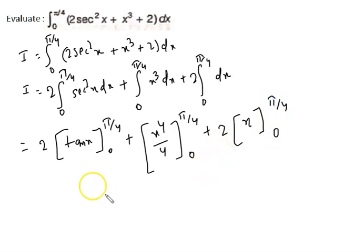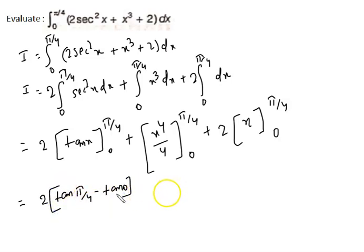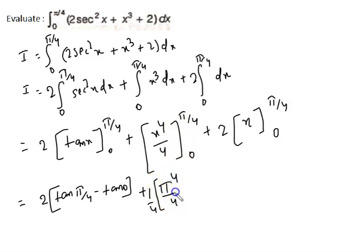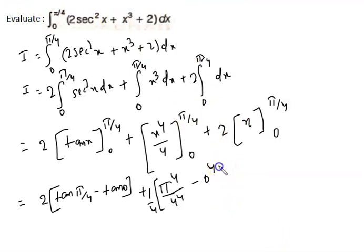Now I am going to put in the limits. We write: 2 times (tan(π/4) − tan 0), plus (1/4) times ((π/4)⁴ − 0⁴), plus 2 times (π/4 − 0). I have taken 1/4 as common from the x⁴/4 term.